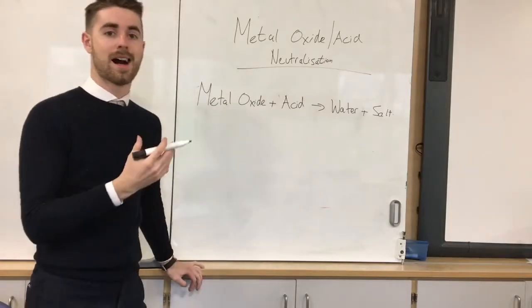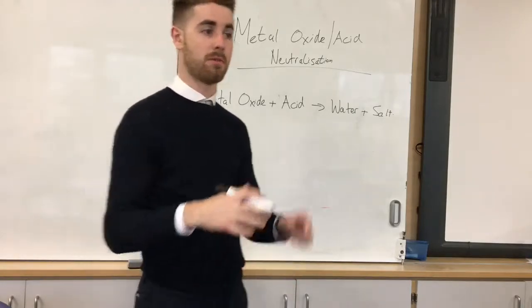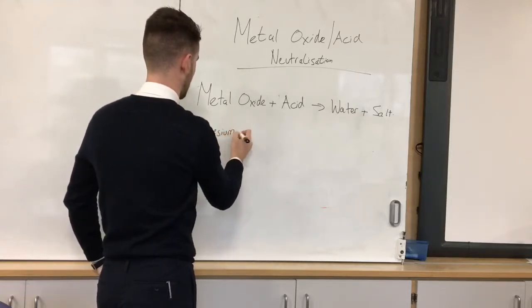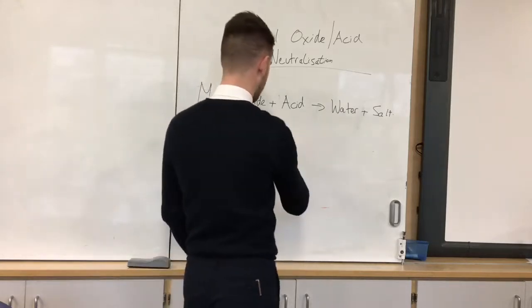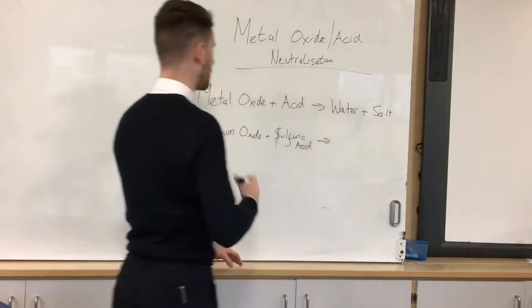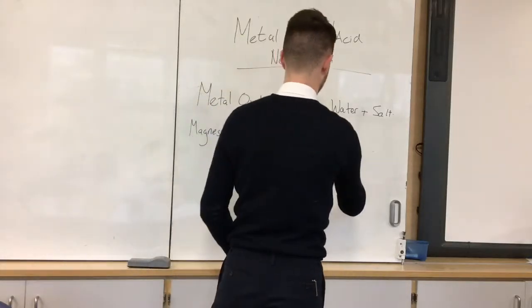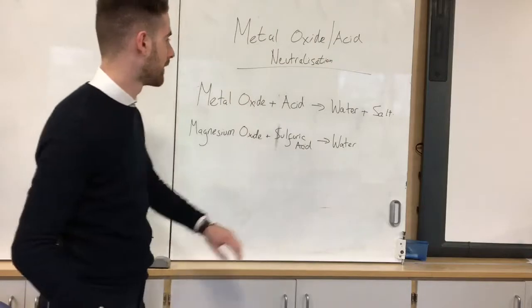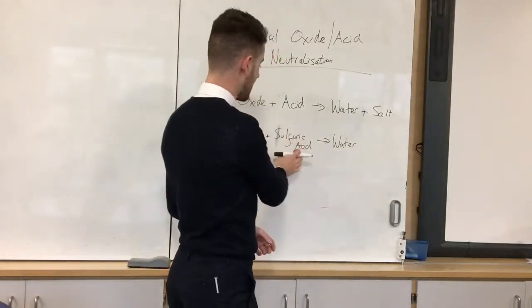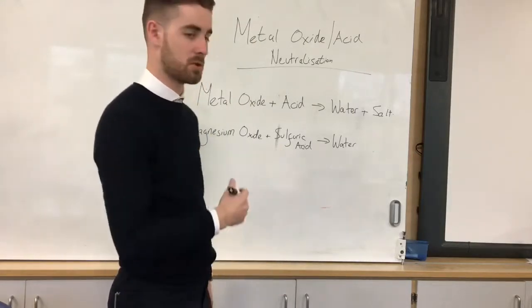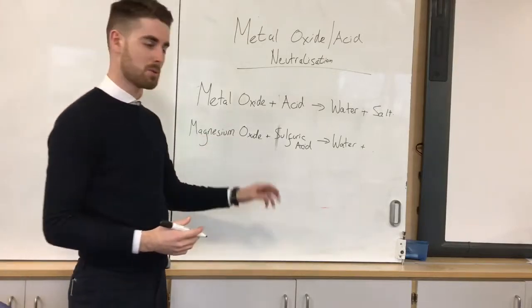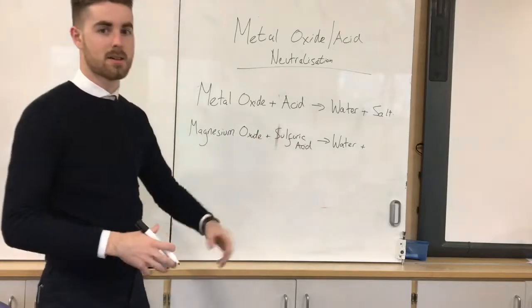The specific word equation for the reaction I just did: what metal oxide did I use? Magnesium oxide. What acid? Sulfuric acid. And what did that give us? Well, first it gave us water. To name the salt, the second part — the surname — comes from the acid, so from sulfuric acid we get sulfate. The metal ion we're left with is Mg²⁺, so we have magnesium. The magnesium and sulfate ions give us magnesium sulfate.